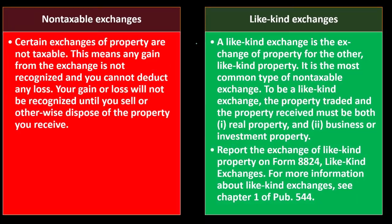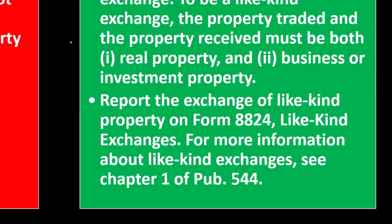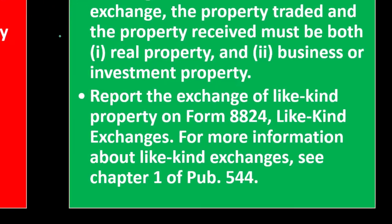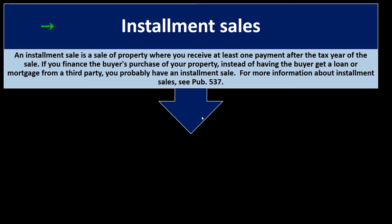To qualify as a like-kind exchange, the property traded and the property received must both be real property and business or investment property. Report the exchange of like-kind property on Form 8824, Like-Kind Exchanges. For more information, see chapter one of Publication 544.